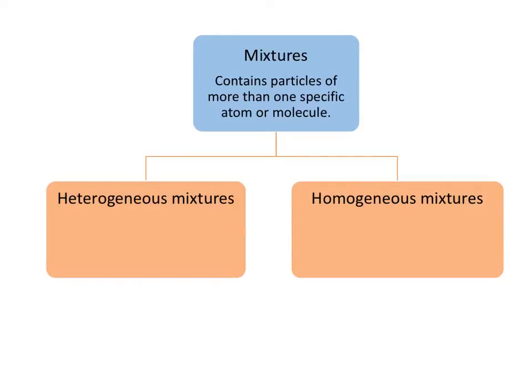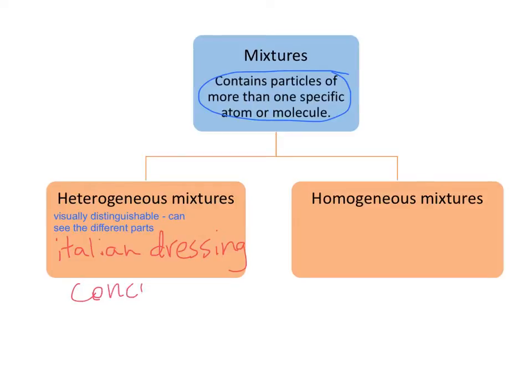So mixtures, again, contain particles of more than one specific atom or molecule. We're going to start with heterogeneous mixtures. Heterogeneous mixtures—the components are visually distinguishable, which means you can see the different parts. What kind of examples of heterogeneous mixtures can you think of? I'm thinking Italian dressing, maybe concrete—anything where you can see the different parts.